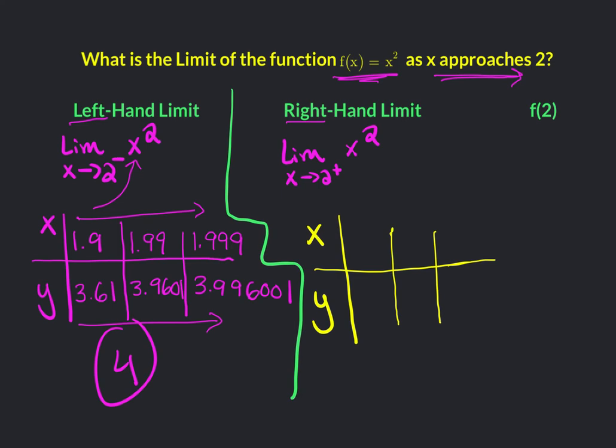Now, let's approach 2 from the right. What's really close to 2? How about 2.1? Even closer, 2.01. And even closer, 2.001. Plug it into your function x squared. 2.1 squared is 4.41. Then we get 4.0401. And even closer, 4.004. And there's a few more decimals, but I can't quite fit them in there.